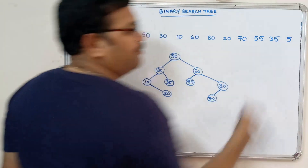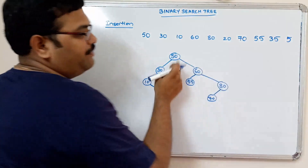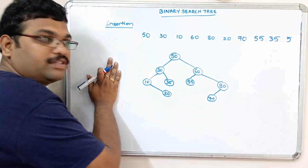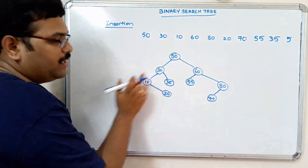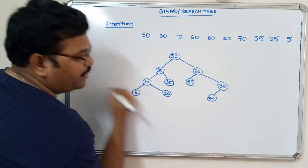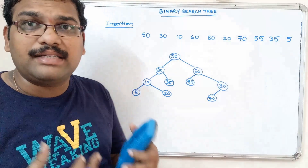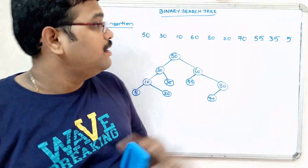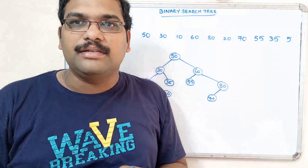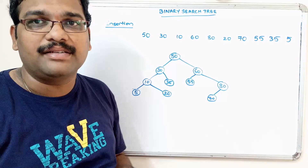If we insert 5: 5 is less than 50, so left subtree. 5 is less than 30, left subtree. 5 is less than 10, left subtree. So we insert 5 to the left of 10. Like this we can construct a binary search tree by the given elements. This is nothing but insertion — how to insert an element into a binary search tree.